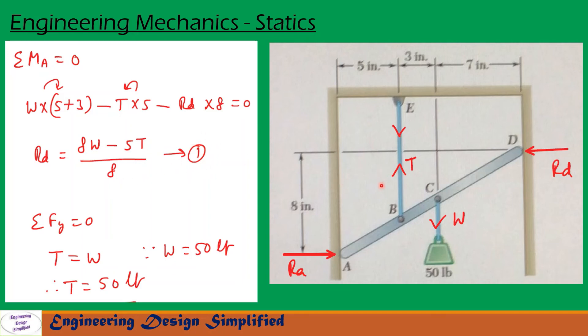Now let us see forces along Y direction vertical. Sigma FY equal to 0. Along vertical direction we have only two forces T and W. From this we can write T equal to W. Since W is 50 lb and T equal to W, T is equal to 50 lb.